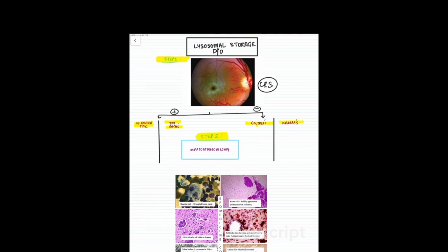The next step is find out whether there is hepatosplenomegaly mentioned in the question or not. If there is hepatosplenomegaly along with cherry red spot, you're dealing with Niemann-Pick. And if there is no hepatosplenomegaly present, then it's Tay-Sachs.